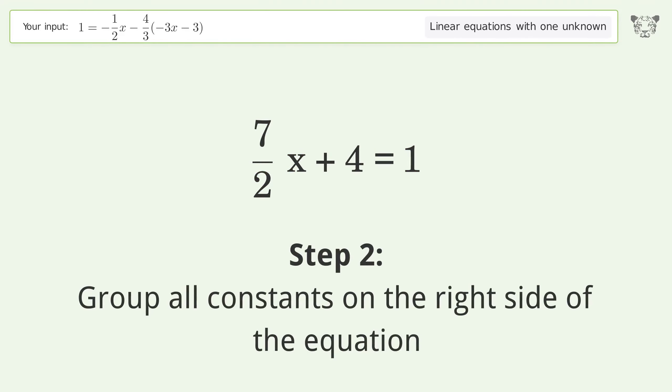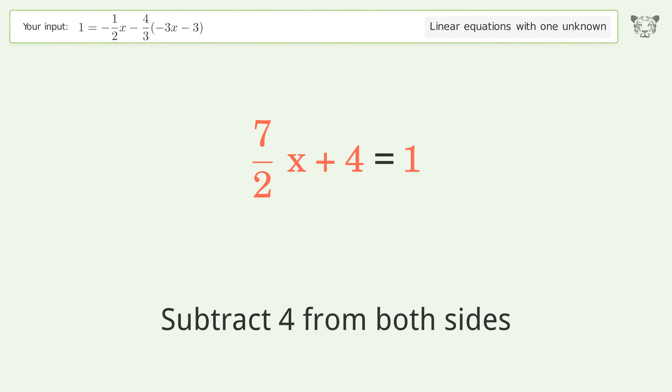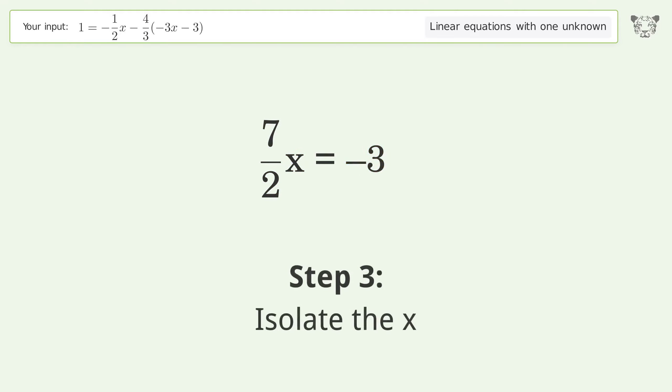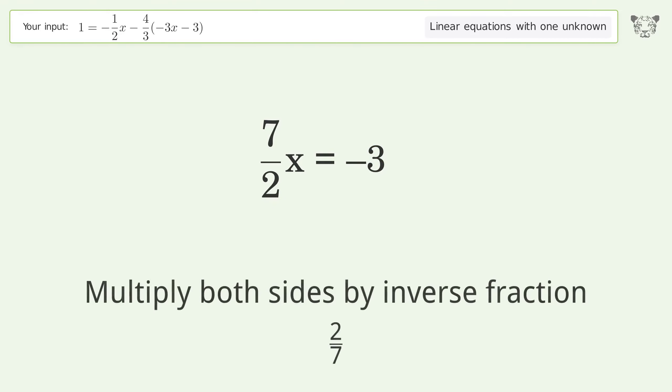Group all constants on the right side of the equation. Subtract 4 from both sides. Simplify the arithmetic. Isolate the x. Multiply both sides by inverse fraction 2 over 7.